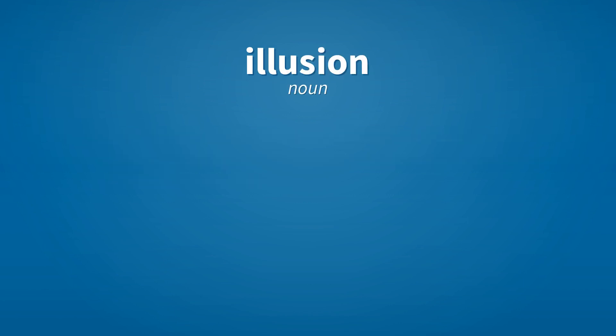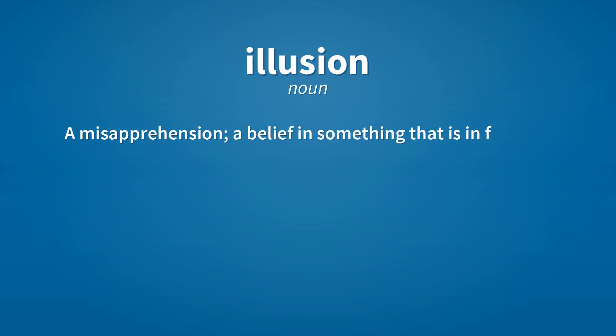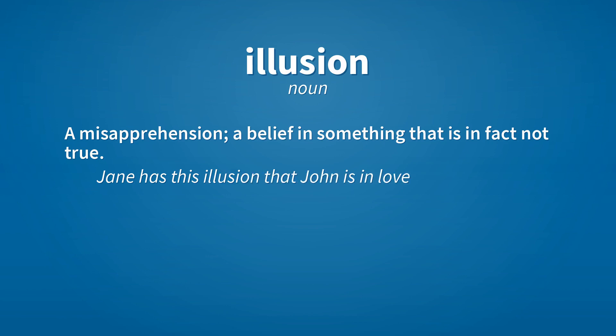Illusion. Noun. A misapprehension, a belief in something that is in fact not true. Jane has this illusion that John is in love with her.